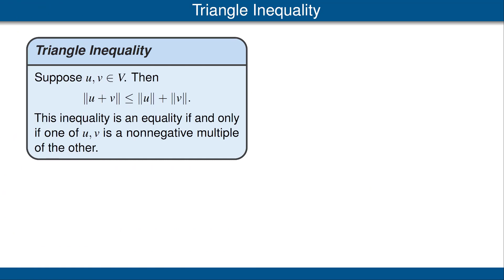One very useful consequence of the Cauchy-Schwarz inequality is the triangle inequality. It says that in an inner product space, the norm of the sum of any two vectors is less than or equal to the sum of the norms. Furthermore, that inequality is an equality if and only if one of the vectors is a non-negative multiple of the other. This inequality is called the triangle inequality because of the geometric picture: in any triangle, the length of any one side is less than or equal to the sum of the lengths of the other two sides.